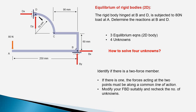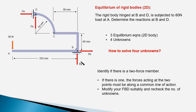Member DC is a two-force member because forces are acting only at points D and C — only at two points of the member. The property of a two-force member tells us that the net force acting at points C and D must be collinear — along the line joining D and C. Therefore we know the direction of the reaction force at D, giving us only one unknown there. With two unknowns at B, the total reduces from 4 to 3, which we can solve with three equilibrium equations.